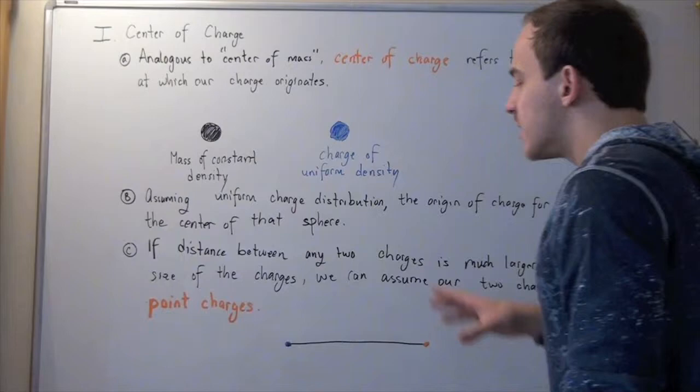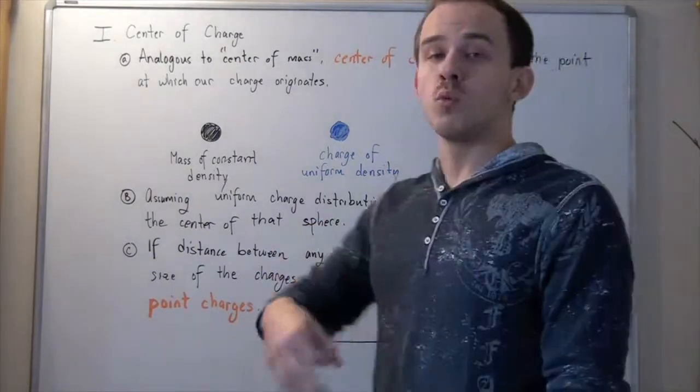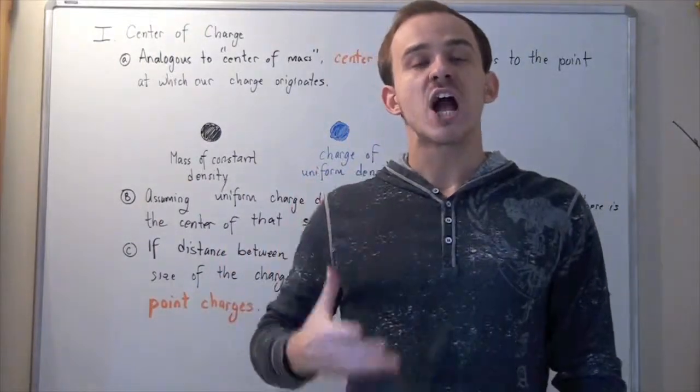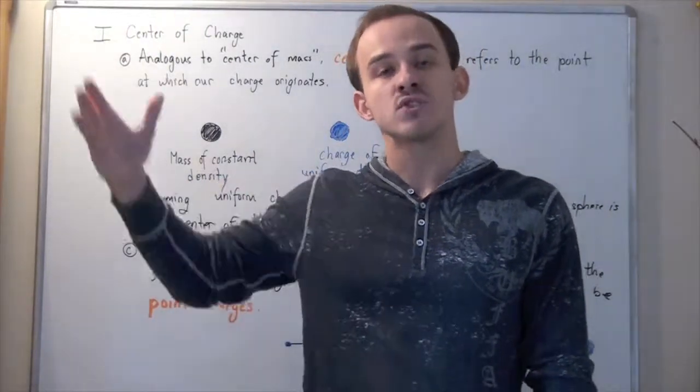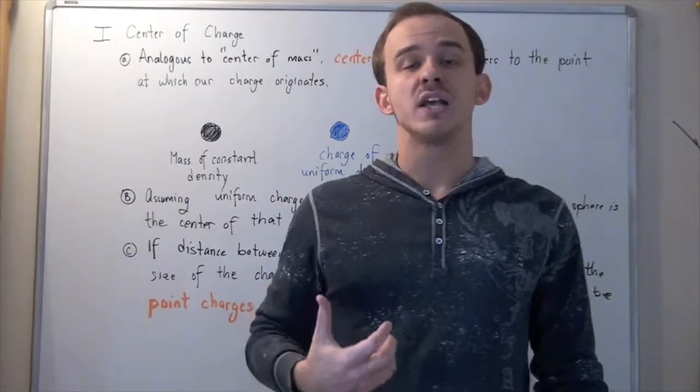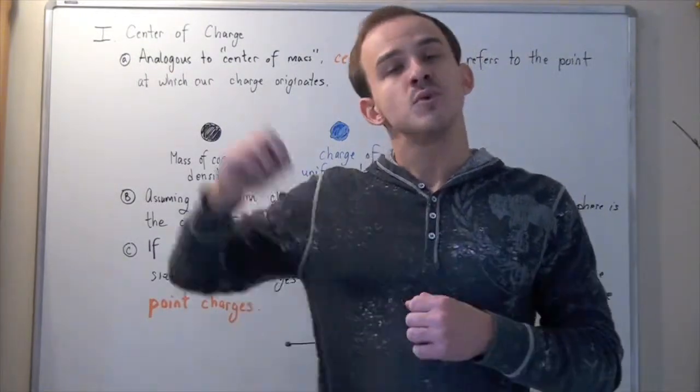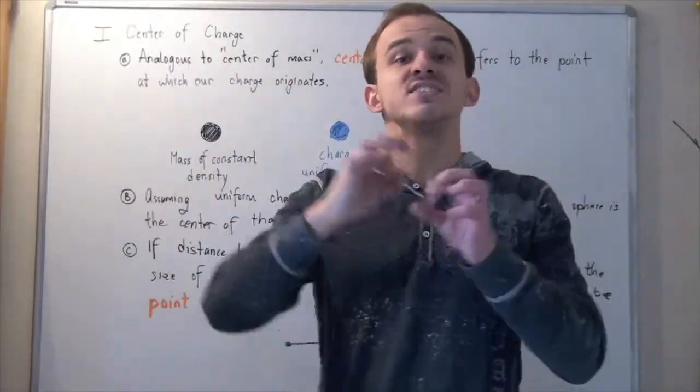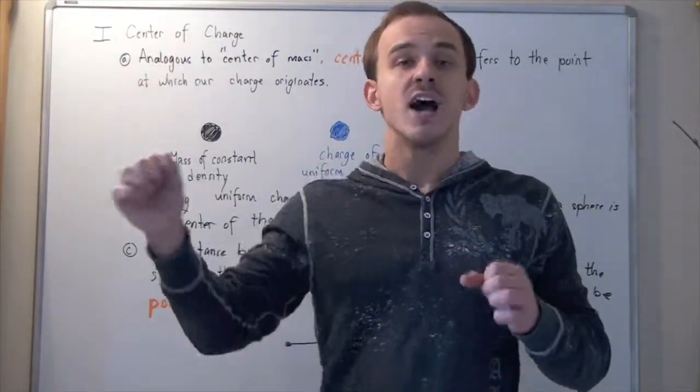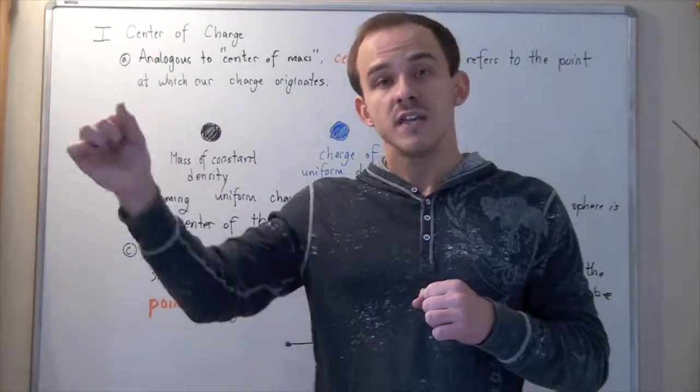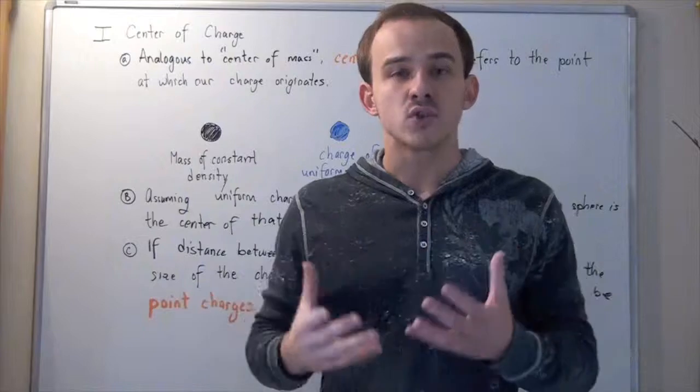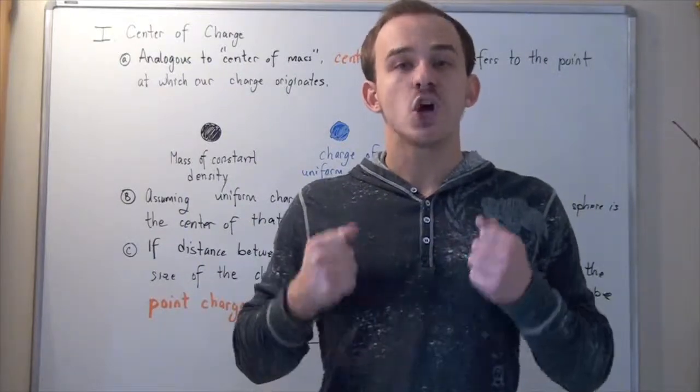In other words, these approximations work for when we're dealing with atoms. If we are approximating the force with which our proton is pulling on our electron, or the force with which our electron is pulling on our proton, because the distance between our electron and proton is so far, is much farther than the radii of either the electron or the proton, we can assume that our electron and proton are point charges.